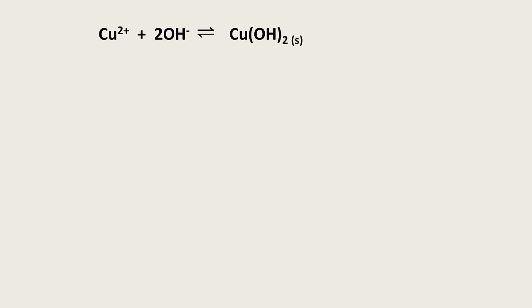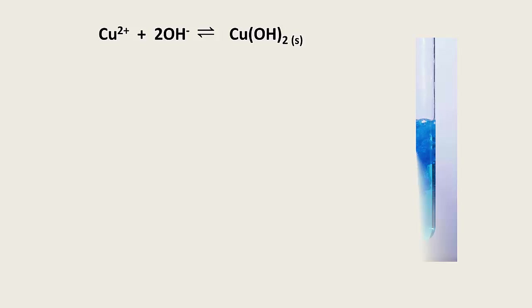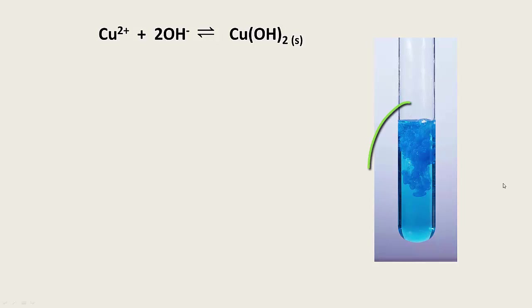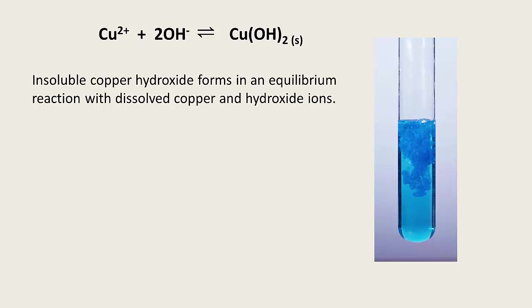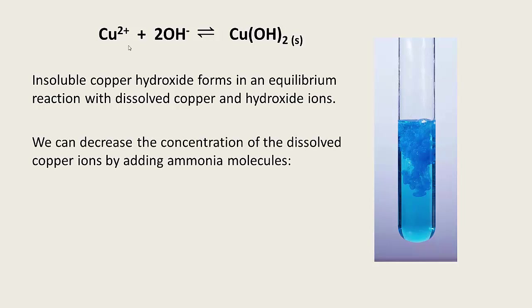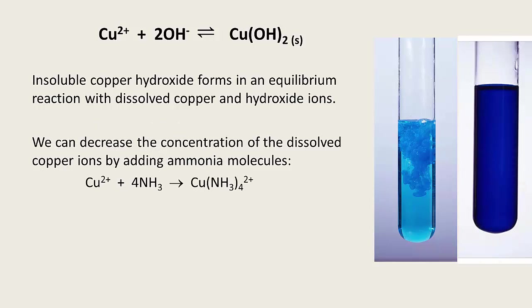Let's look at a reaction to demonstrate this. This is a reaction where copper ions combine with hydroxide ions to form an insoluble copper hydroxide precipitate — a reaction covered earlier in the year in the ions in solution internal standard. Precipitates form in equilibrium reactions. You'll recognise this lovely gelatinous blue precipitate of copper hydroxide. We can decrease the concentration of a reactant — in this case the copper ions — by adding ammonia molecules. These will react with the copper ions and form a complex ion, giving the very distinctive bright blue colour of the complex ion formed from the reaction of copper ions with ammonia.